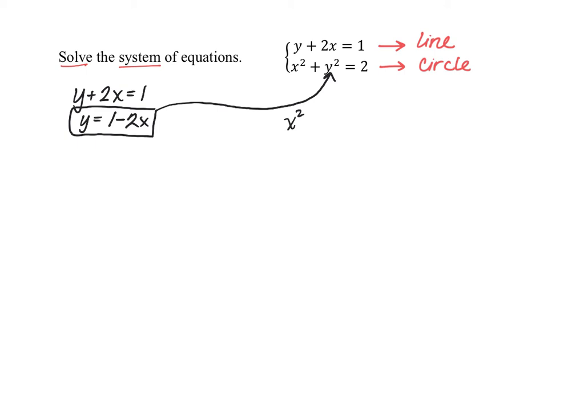We'll substitute that in place of y. So instead of having x squared plus y squared equals 2, we'll perform our substitution. y equals 1 minus 2x. So substituting that in will give us this equation. Notice now we just have one variable—we only have the variable x. So with a little bit of algebra, we can solve and find the value of x.